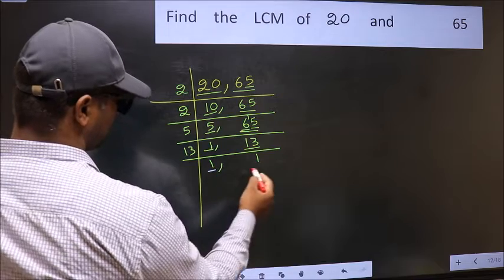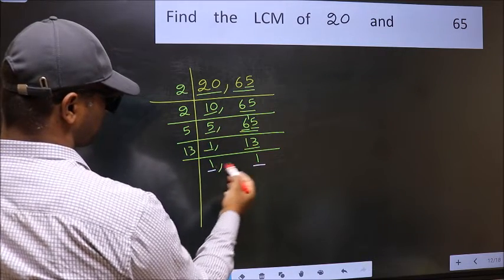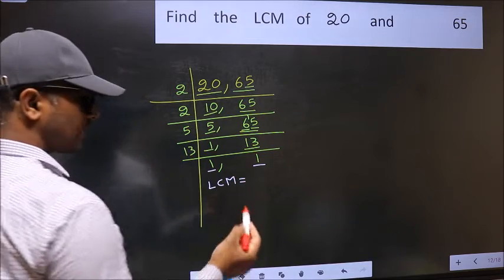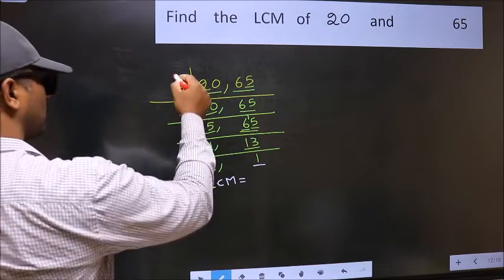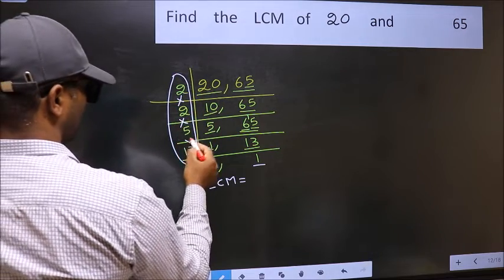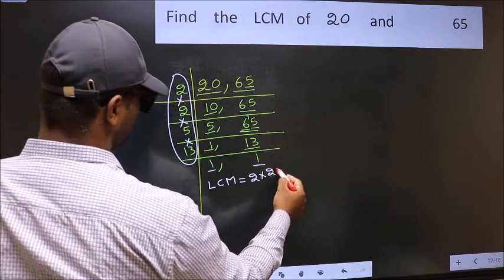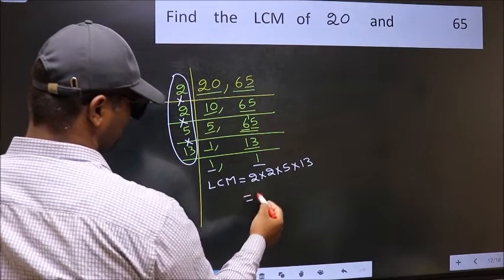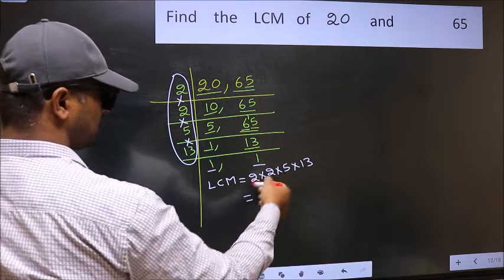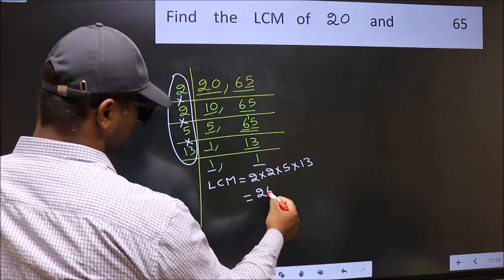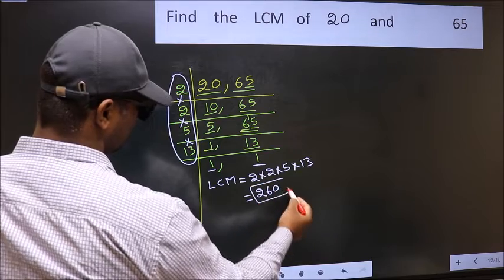We got 1 in both places. LCM is the product of these numbers. That is 2 into 2 into 5 into 13. When we multiply these numbers we get 260 as our LCM.